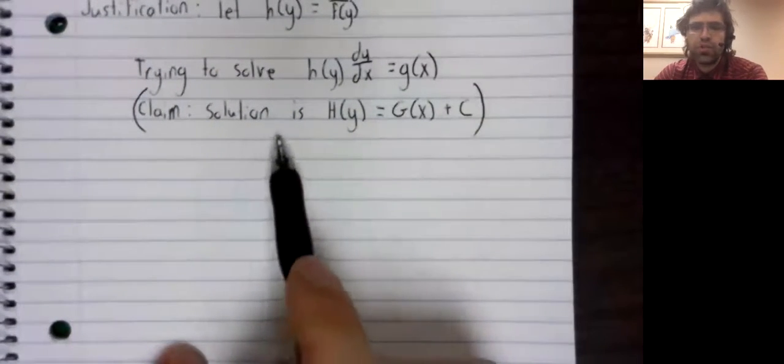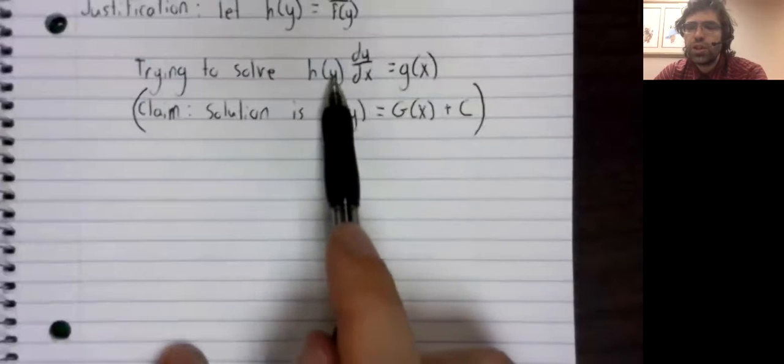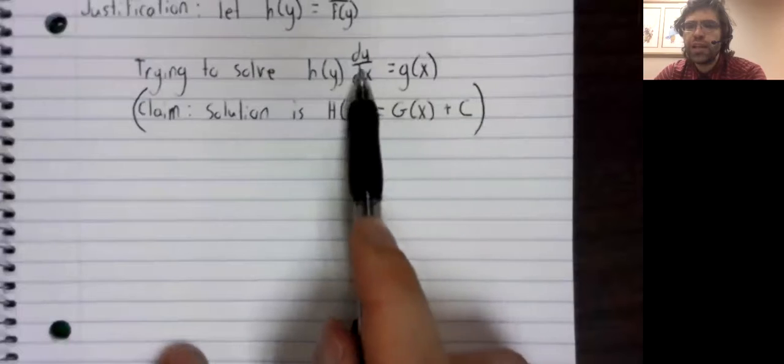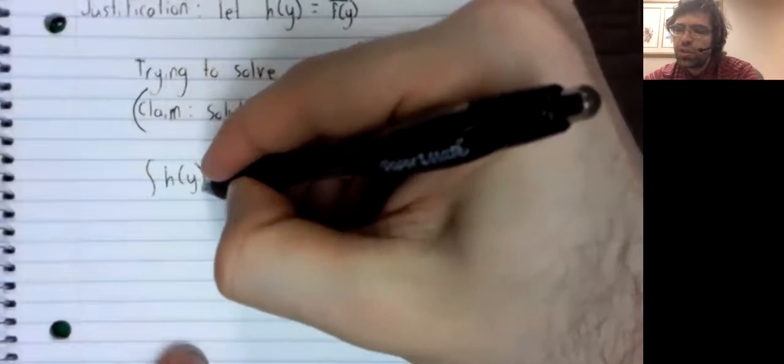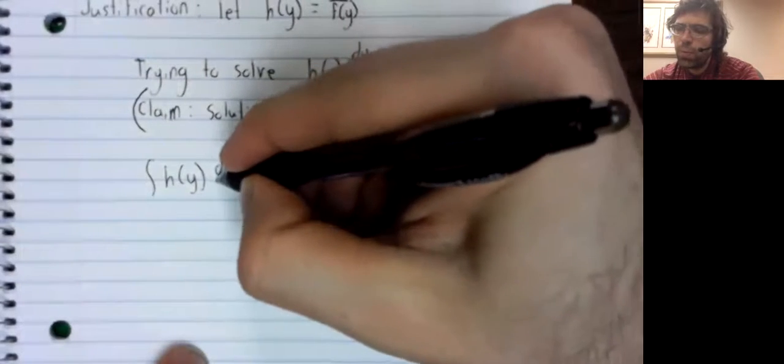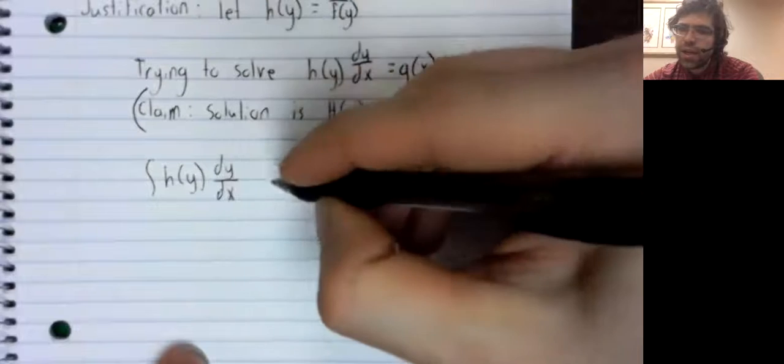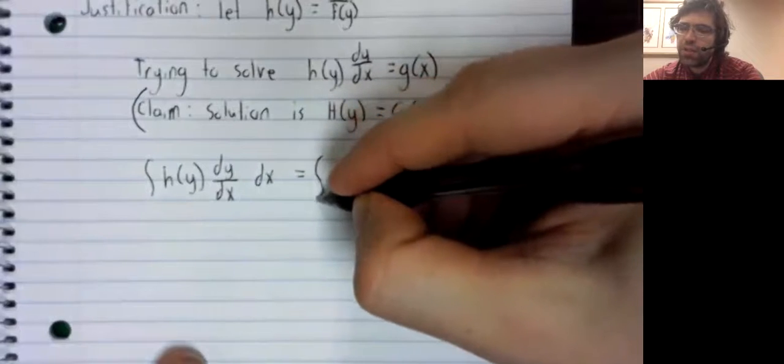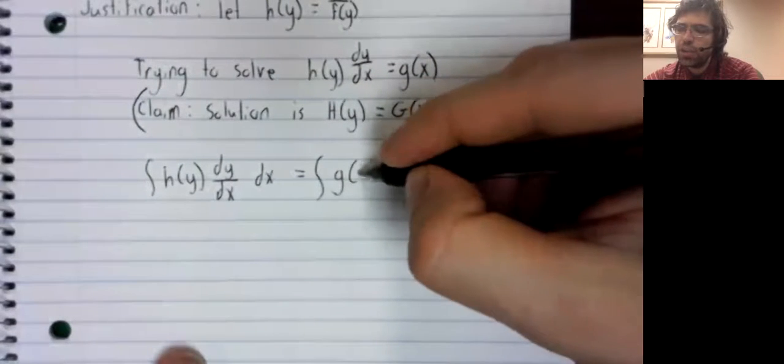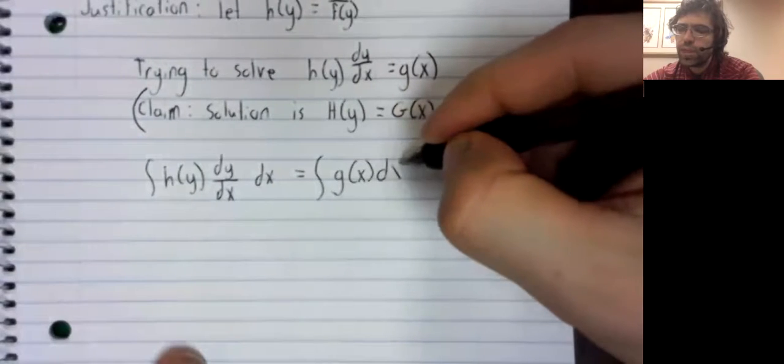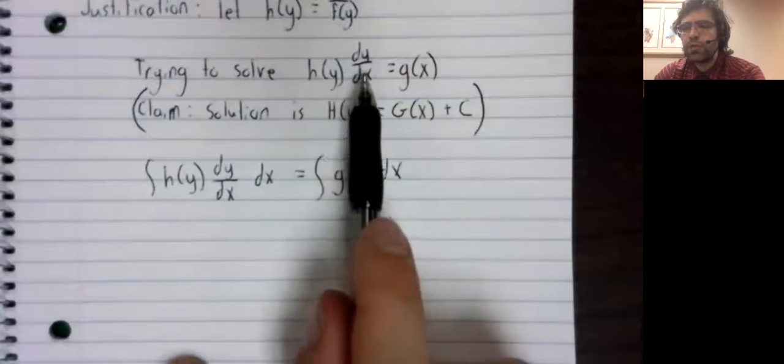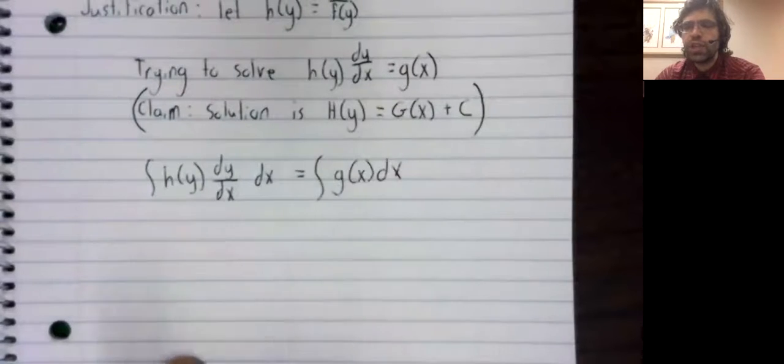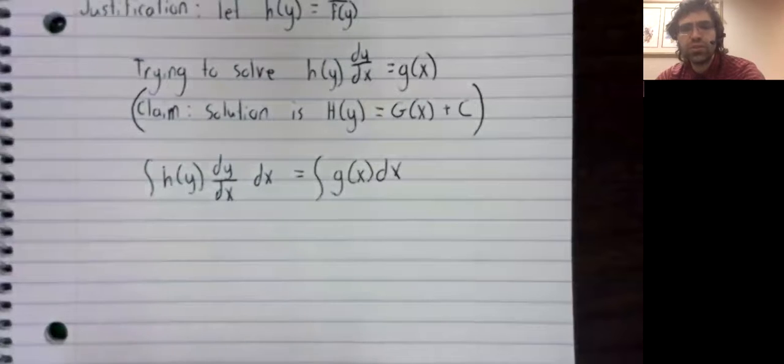To justify this claim, let's look at the equation we're trying to solve. We can certainly take two functions that are equal to each other and integrate both of them with respect to the same variable. So I'm taking this equation we're trying to solve and integrating with respect to x.